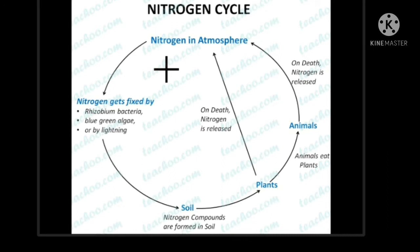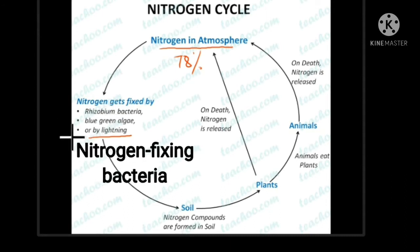This cycle shows the flow of nitrogen. Nitrogen gets fixed either by lightning, which is a natural process, or it is converted by a group of bacteria known as nitrogen-fixing bacteria.